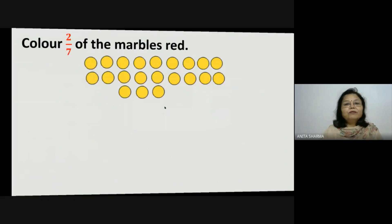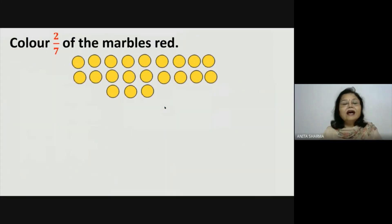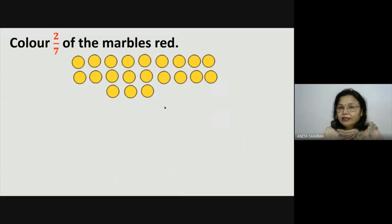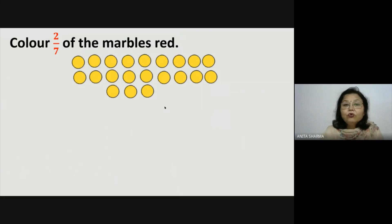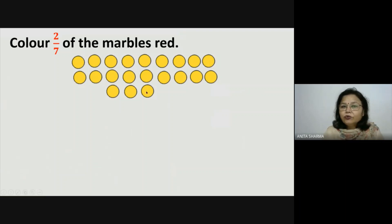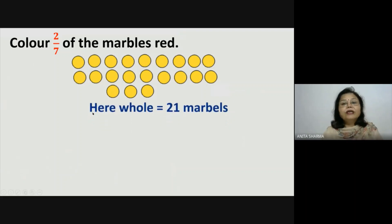Now let us do one more task which is very interesting: color 2 seventh of the marbles red. You can see a few marbles here. First of all we should know what is our whole, so let's count: 1, 2, 3, 4, 5, 6, 7, 8, 9 and 9 is 18, 19, 20, 21. Means our whole is 21 marbles.